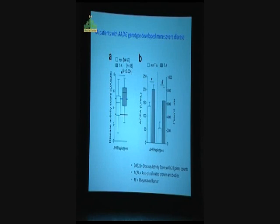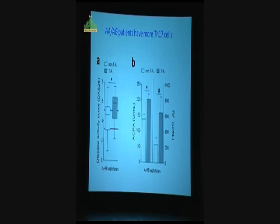If you look at the SNP, if you have TA compared to non-TA, you can see there is a significant increase in the disease score called DAS28, the disease activity score 28 joints in the body. That is correlated very nicely with the increase of ACPA and rheumatoid factor. If you look at the AGG patient, the patient with an AA-AG phenotype has significantly higher disease score and also ACPA and rheumatoid factor.